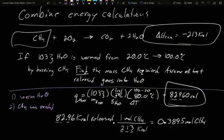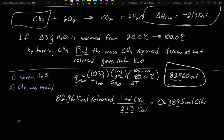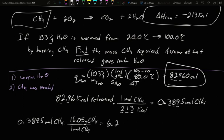0.3895 moles of methane. Three sig figs. So I can find my moles of methane. And the last question is just to find the mass of it. So if I know the moles, 0.3895 mole of CH4. And in every one mole of CH4, well, carbon's 12, hydrogen's 1.008. Comes out about 16.05 grams of CH4. So this is going to be 6.25 grams of CH4.